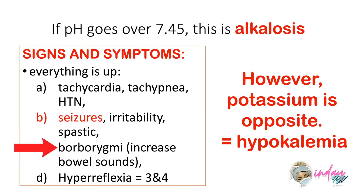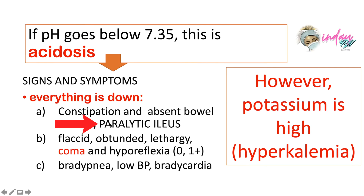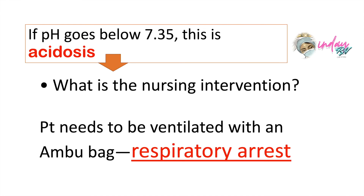Let's speak about borborygmy versus paralytic ileus. In borborygmy, the stomach is always noisy — there is increased bowel sound because everything in alkalosis is high. Meanwhile, in paralytic ileus, the GI is shutting down. And always remember that if your patient is acidotic, apply your critical and emergency nursing skills.